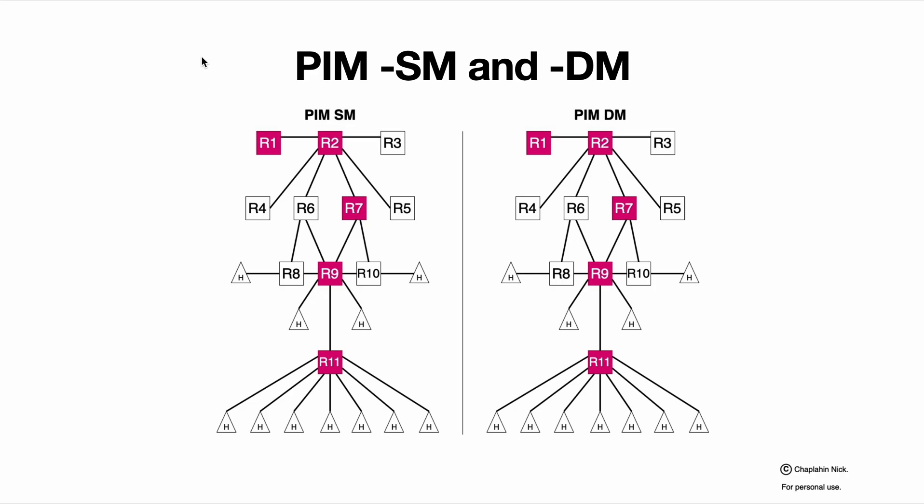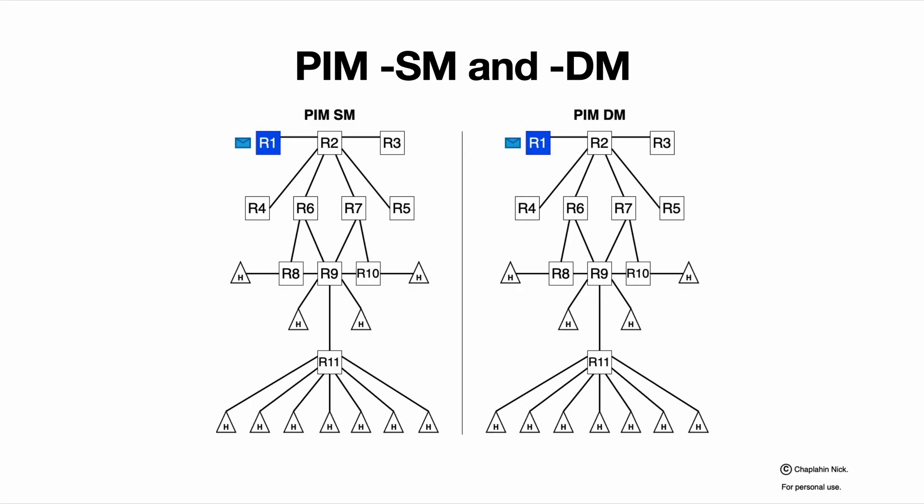So SM first builds the topology and sends only to receivers. DM sends to everybody, collecting information about those who refuse and building a topology to send only to those who didn't reject this traffic.